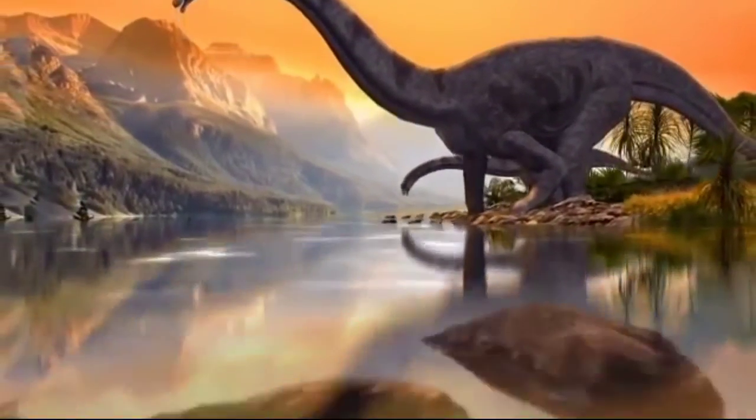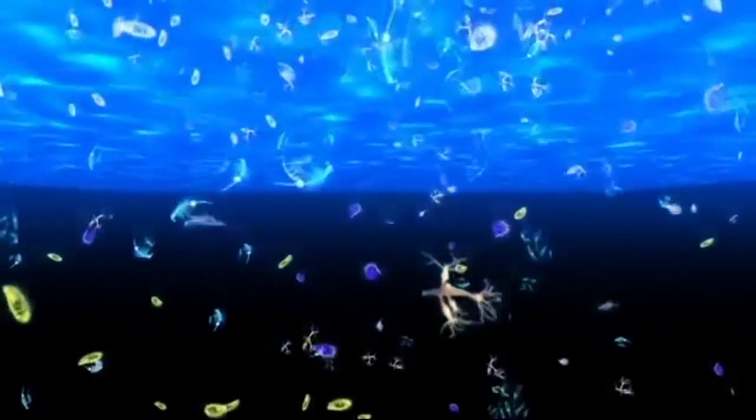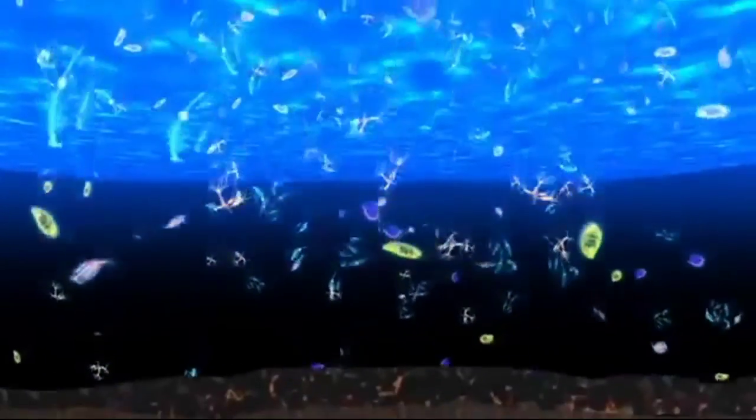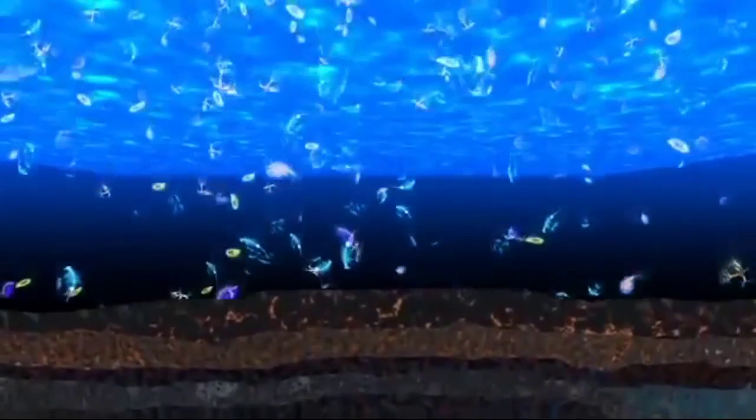About two billion years ago, marine organisms like algae and microscopic animals and plants died and settled on the ocean floor.